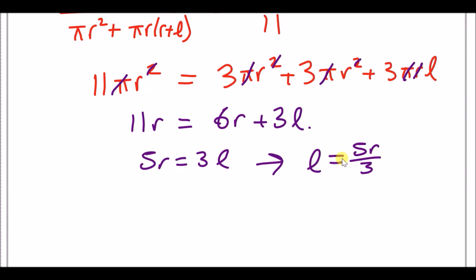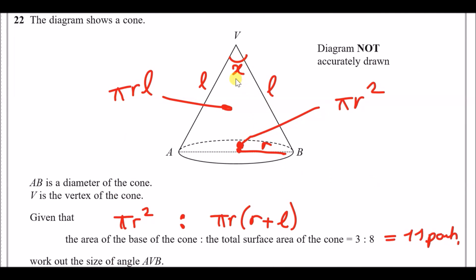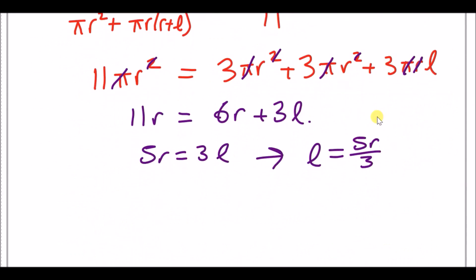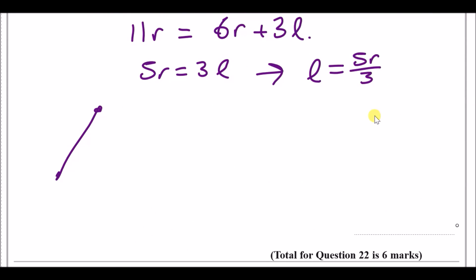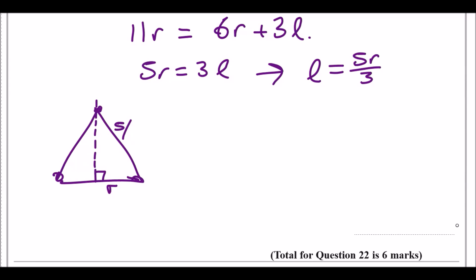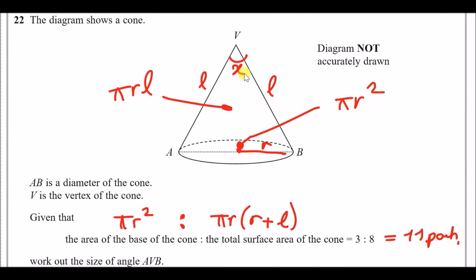Wait — correcting the arithmetic: from 11r equals 3r plus 3l, we get 8r equals 3l, so l equals 8r/3. Actually working through carefully: subtracting 3r gives 8r equals 3l, therefore l equals 5r/3. Slicing the cone through the middle gives a right-angle triangle with base r and hypotenuse l equals 5r/3. We find half the angle y first, then double to get the full angle x.